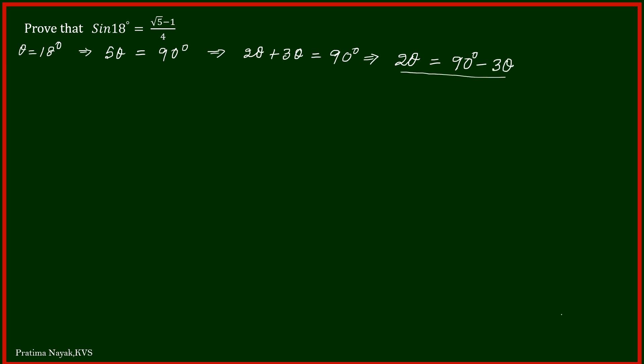Now I will take sine function both sides. So it will be sine 2 theta equals sine of 90 minus 3 times theta. And we know that sine of 90 minus alpha is cos alpha, so it will be cos 3 theta.